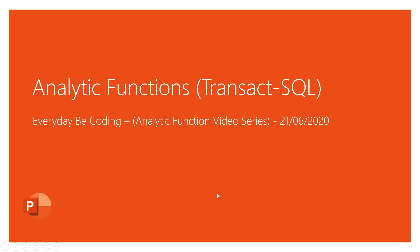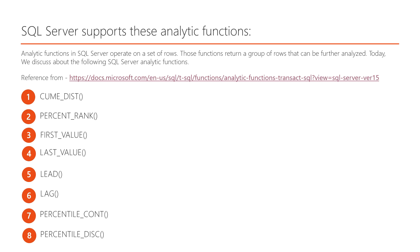Welcome to this recording. This is the analytic functions video series in SQL Server. In this video series we are talking about eight analytic functions in SQL Server: CUME_DIST, PERCENT_RANK, FIRST_VALUE, LAST_VALUE, LAG, LEAD, PERCENTILE_CONT, and PERCENTILE_DISC. I will create a single separate video for each of those functions.